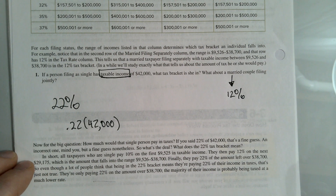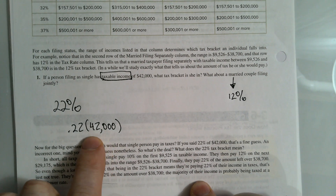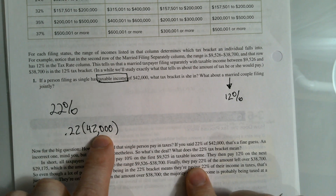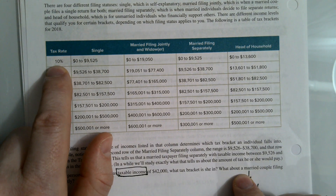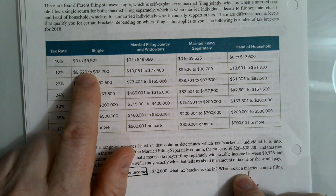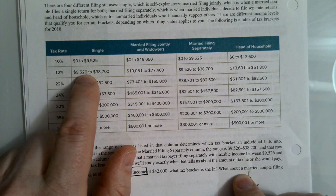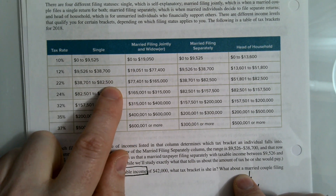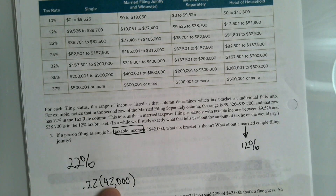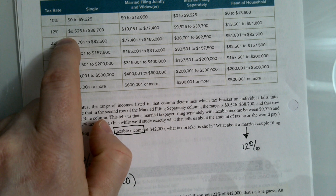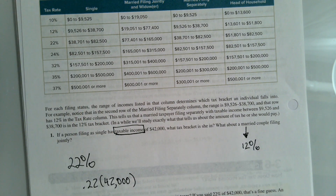They would pay 22% on all their income only under a flat tax. Instead, everyone is taxed at 10% on the first $9,525 they make. The amount earned over that is taxed at 12%, and the amount over that threshold is taxed at 22%. Our job is to figure out how much of the $42,000 income gets taxed at each of these three different rates. This is called a progressive tax.